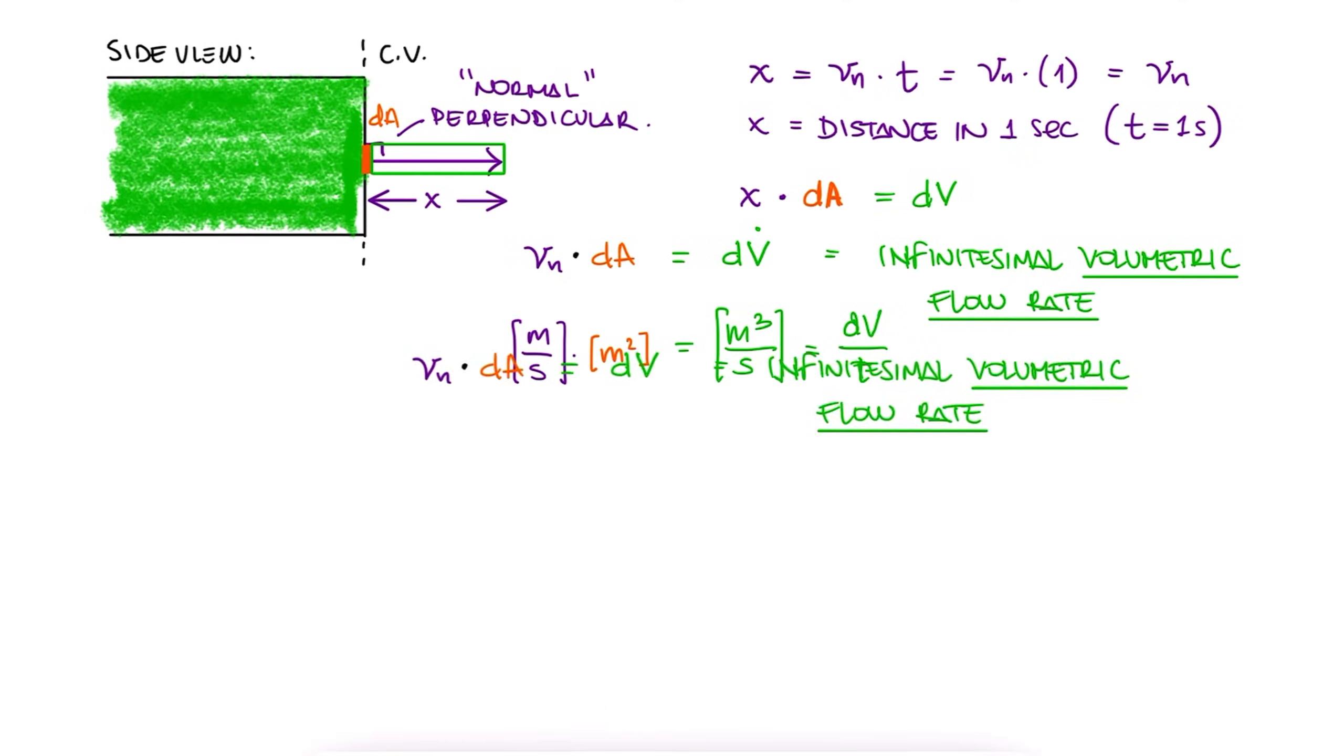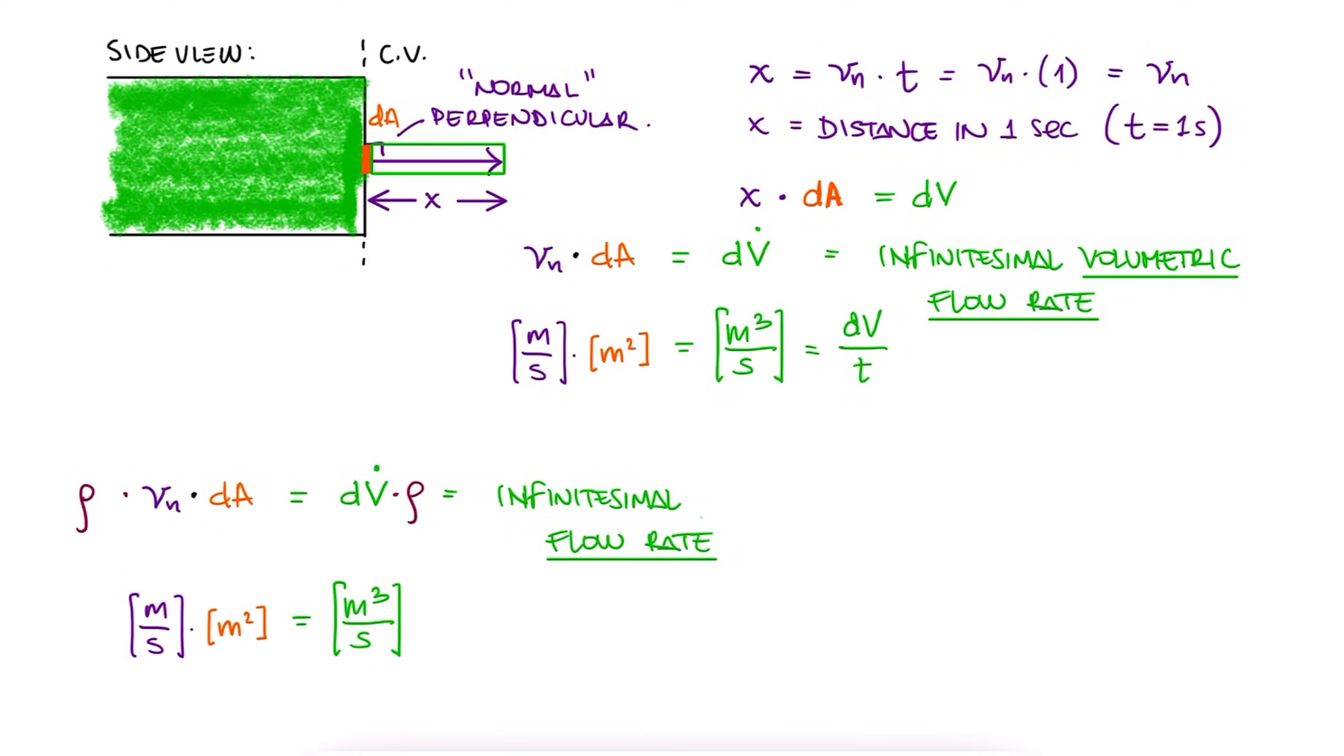In any of the two cases, if we now multiply this expression by the density of the fluid, we obtain kilograms per second, which is the same as mass flow rate dM dot.